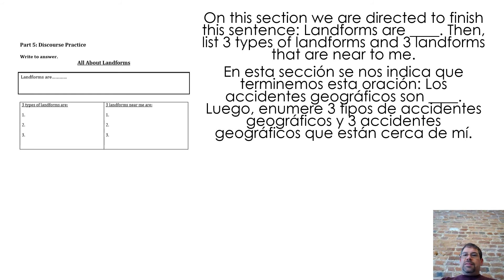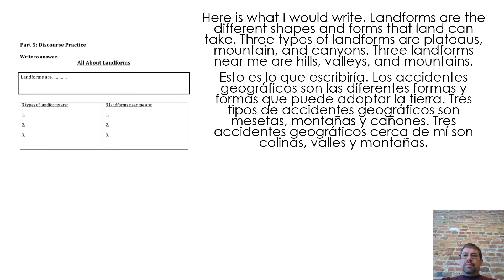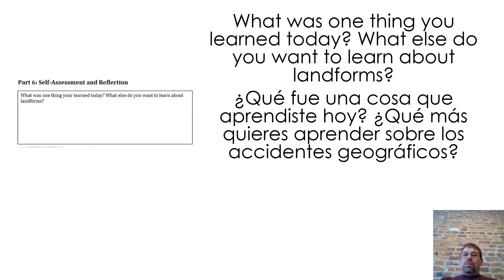In this section, we are directed to finish this sentence: 'Landforms are blank,' then list three types of landforms and three landforms that are near me. Here is what I would write: 'Landforms are the different shapes and forms that land can take.' Three types of landforms are plateaus, mountains, and canyons. Three landforms near me are hills, valleys, and mountains.